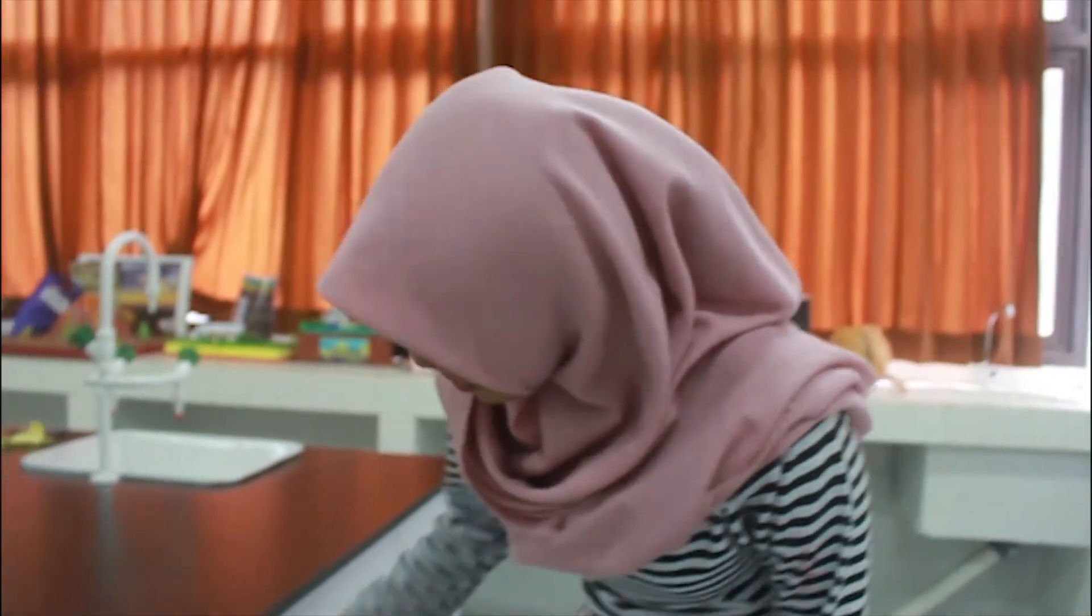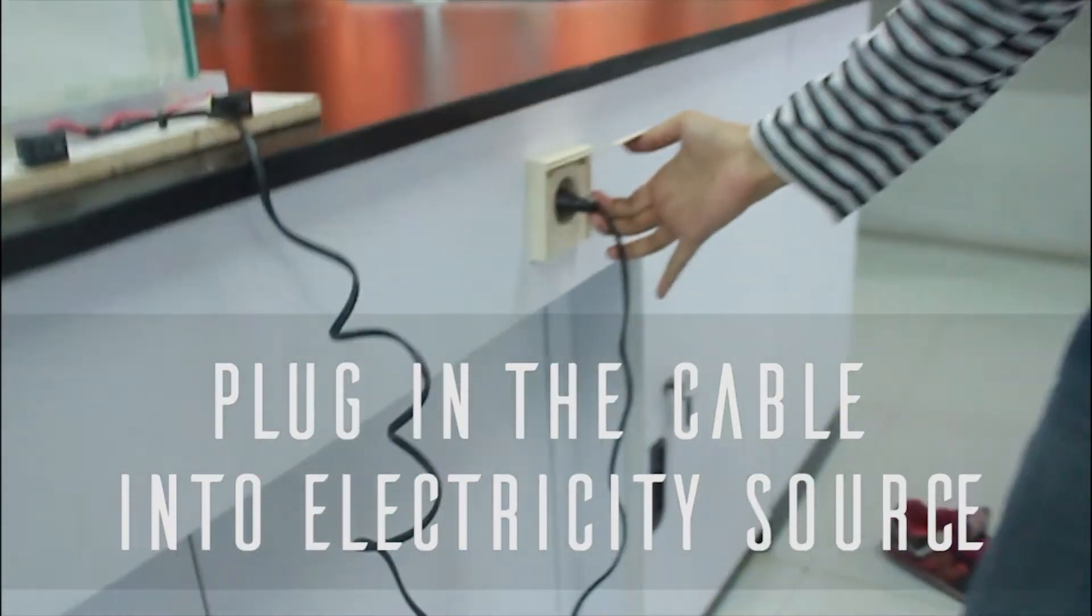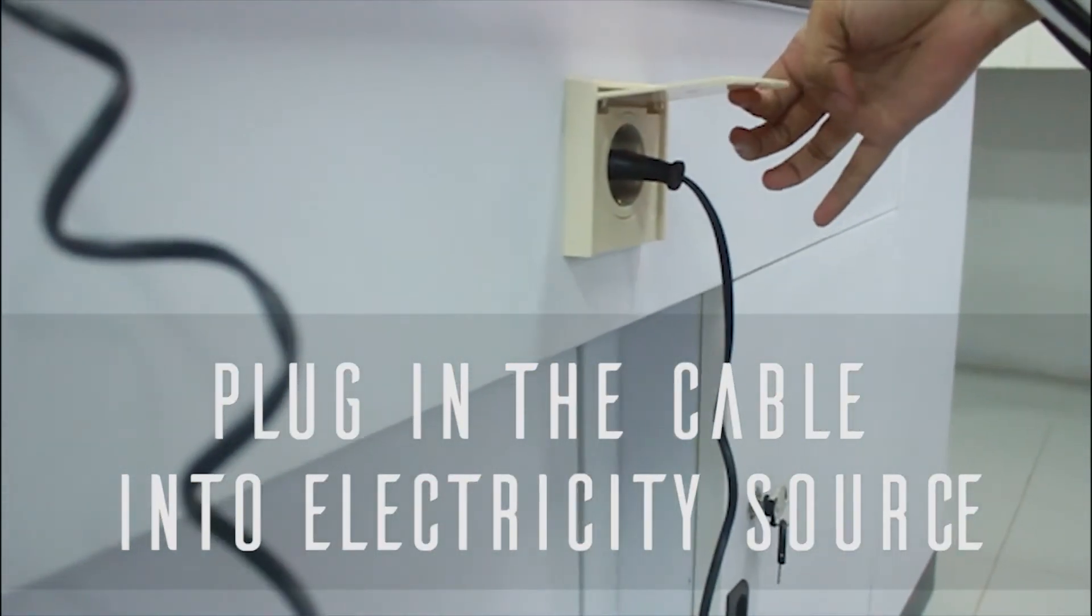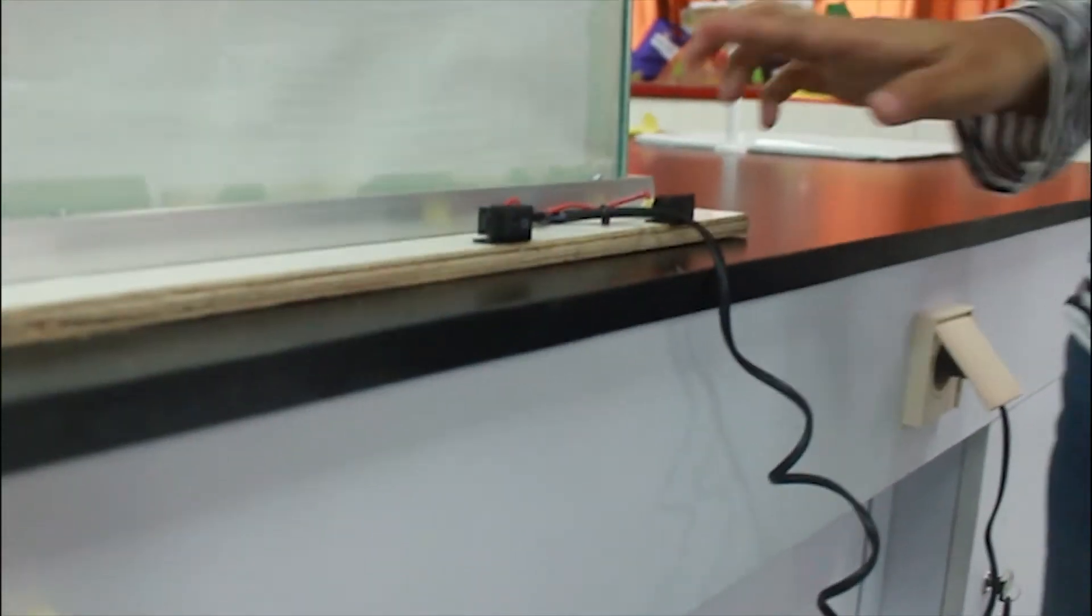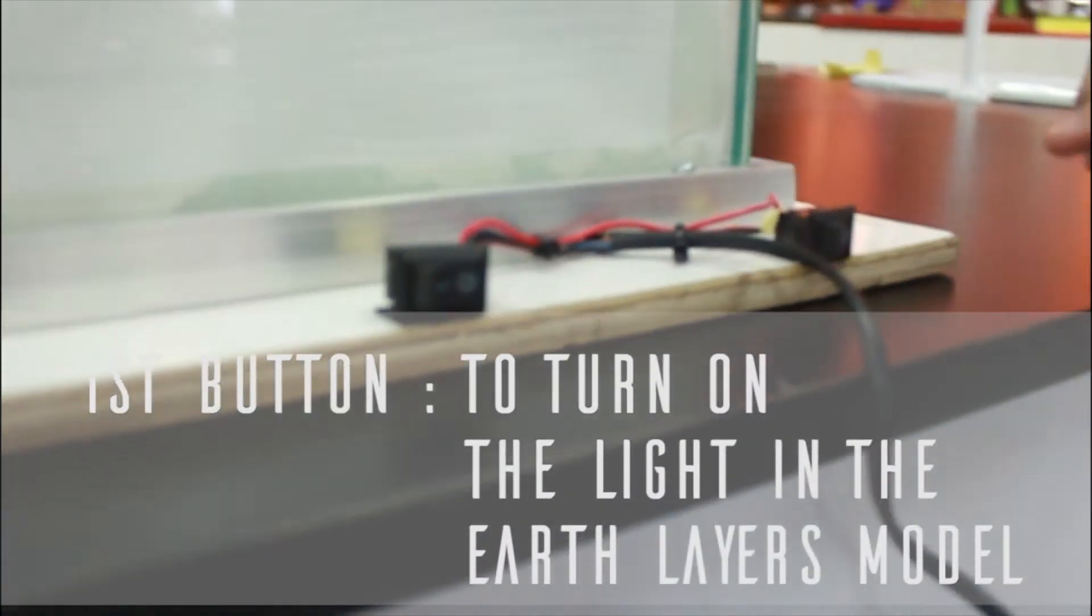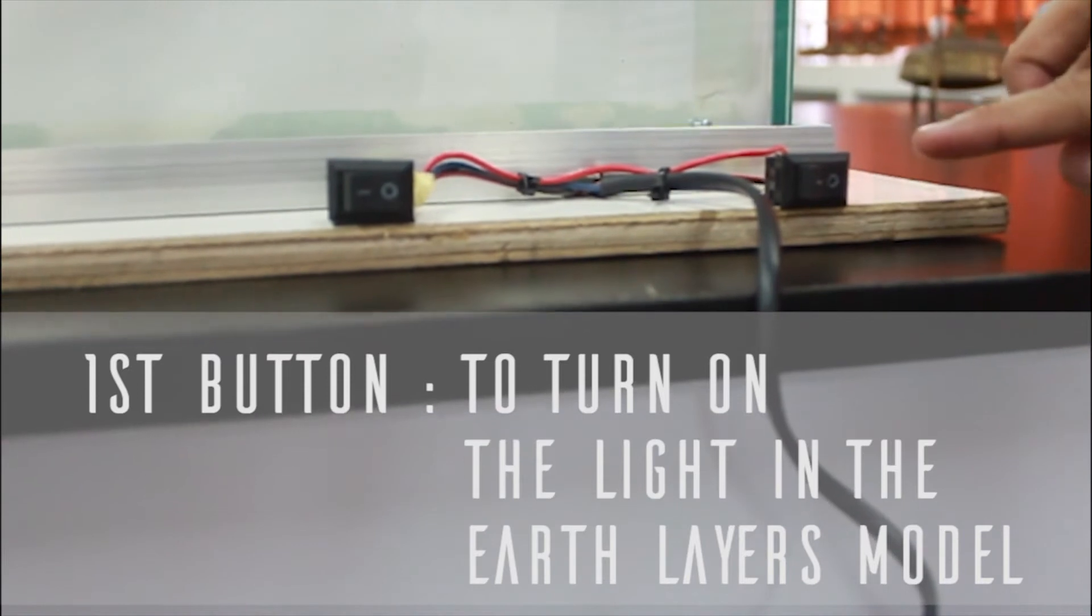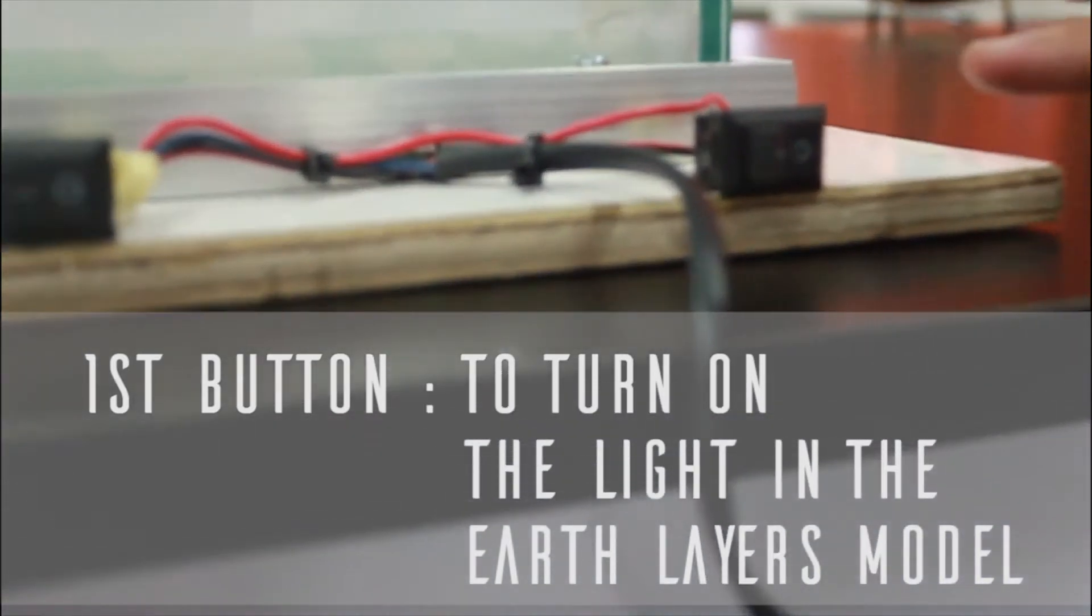First, plug in the cable. Then there are two buttons. The first button is to turn on the light of Earth layer model.